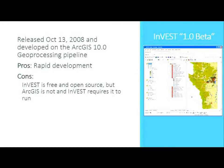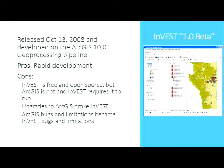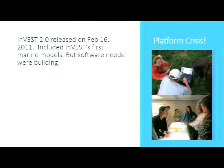One big con: InVEST is free and open source, but it requires ArcGIS to run, which costs thousands of dollars. That sort of works in the developed world — NGOs can get free Esri licenses — but in the developing world, say Vietnam, local Esri offices can't give out free licenses because that's their entire market. Another issue: every time ArcGIS upgraded we had to upgrade InVEST, and it often broke.